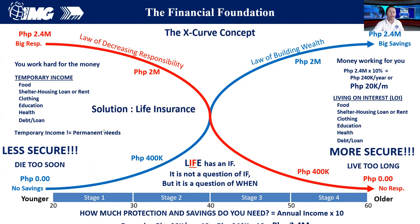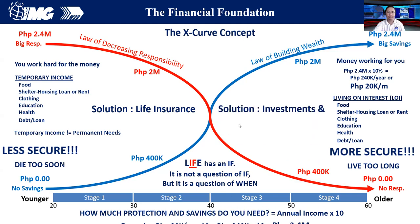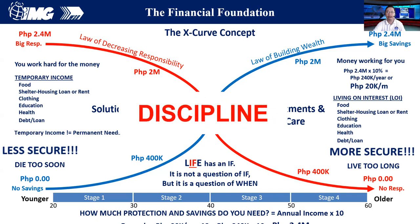At the less secure era, if you don't have savings yet, you need life insurance. The purpose of life insurance programs is to cover your big responsibilities in case you die too soon. And at the more secure part, the solution is you need to have investments and long-term care. The only way to achieve those is you need some discipline. Discipline is the key to build wealth.